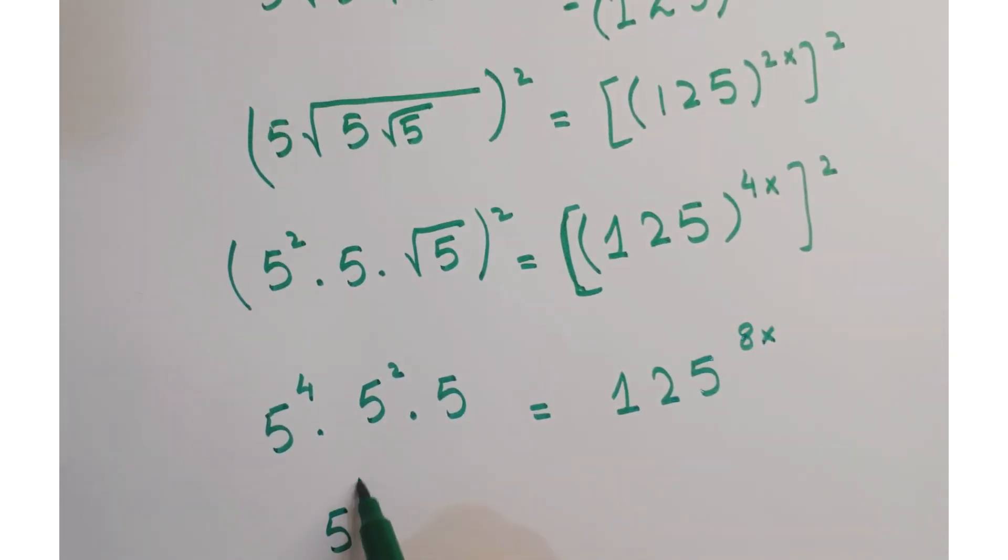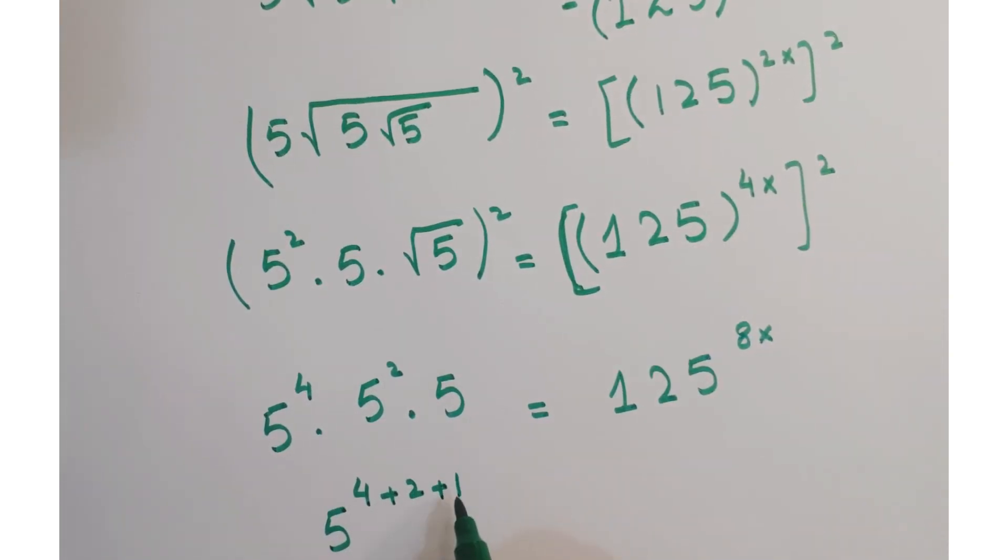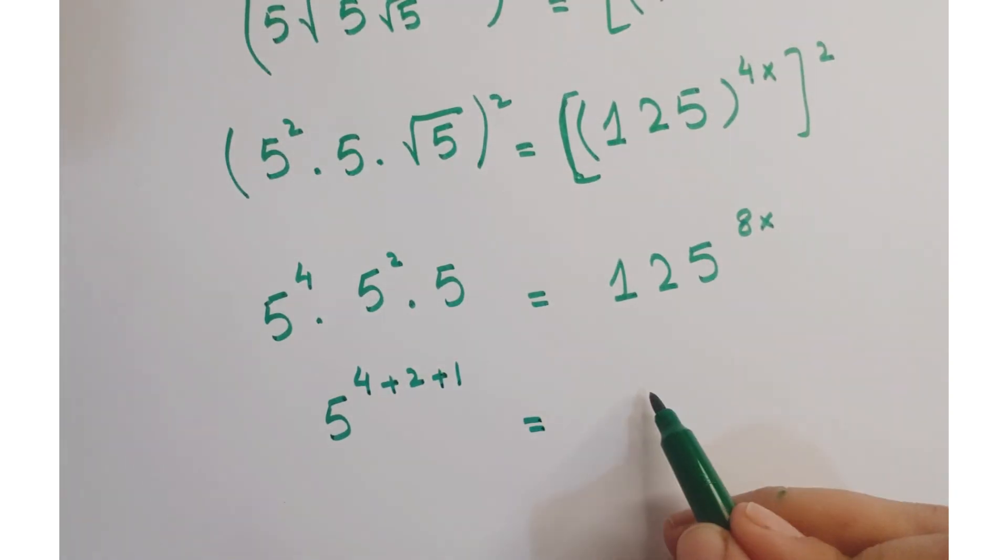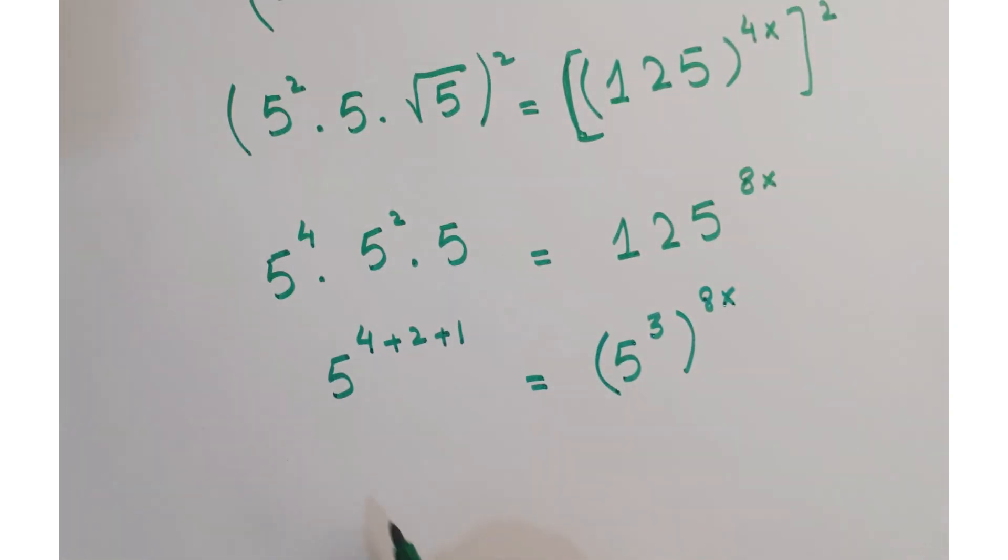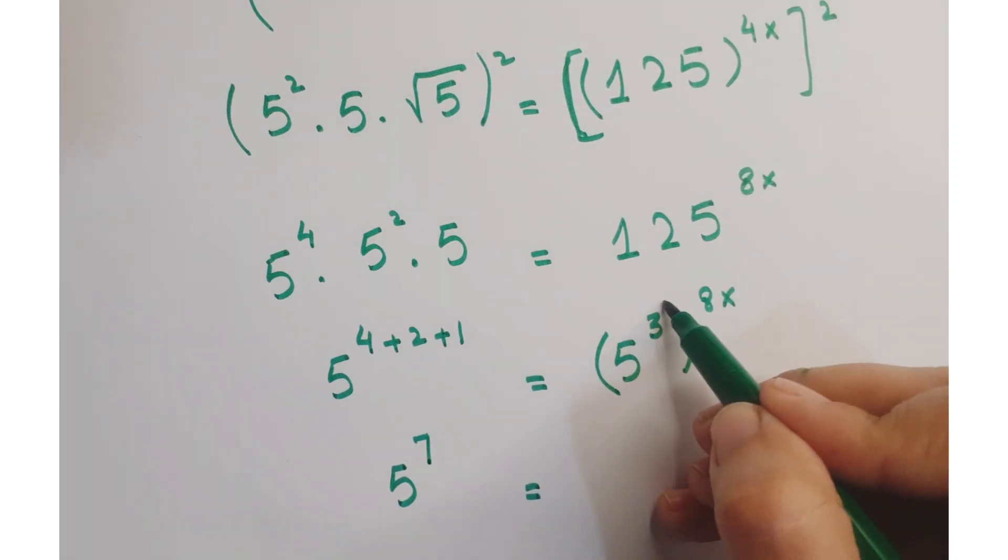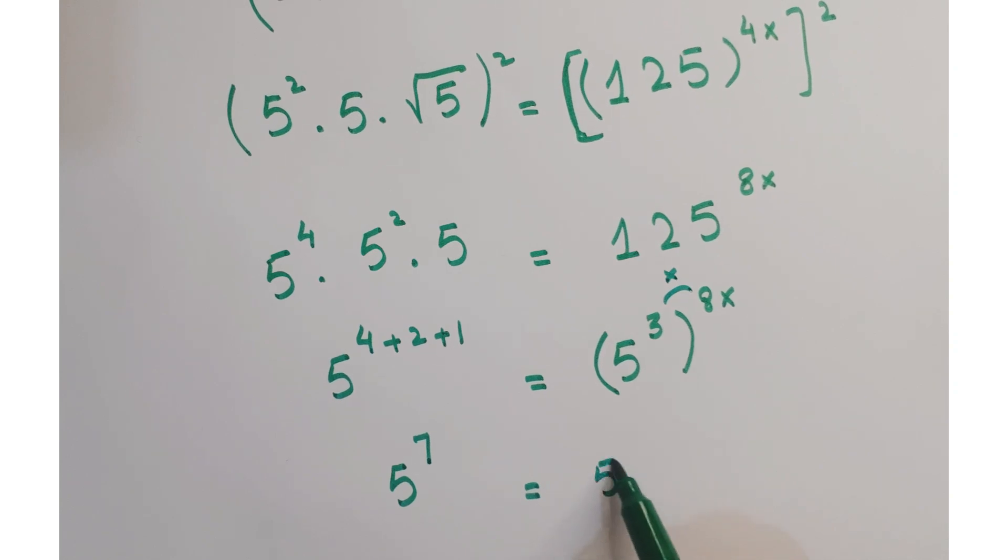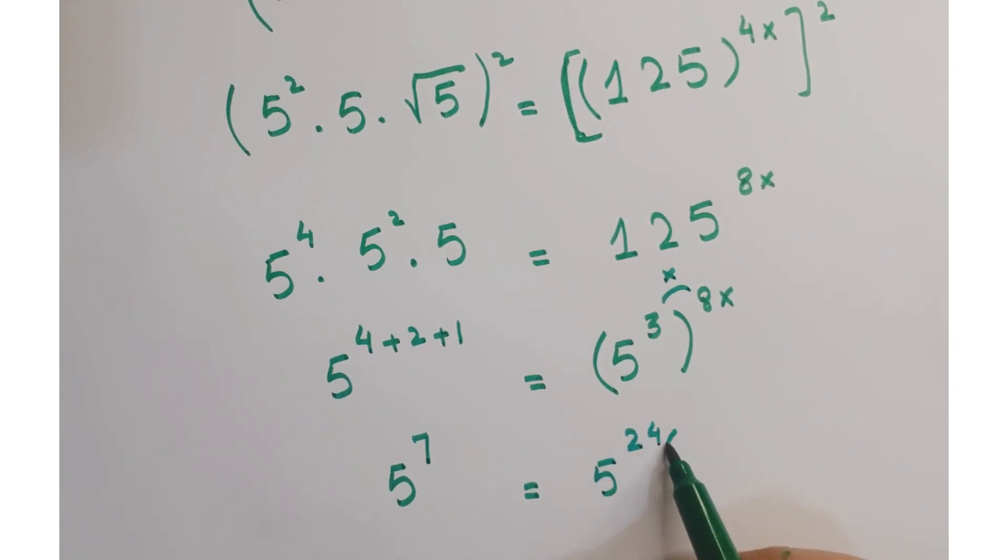Since the bases are same, just add up their powers. Now, here this 5, 125 can be written as 5 cube whole to the power 8x. Here you get 5 to the power 7 and this is 5. These powers get multiplied. You get 5 to the power 24x.